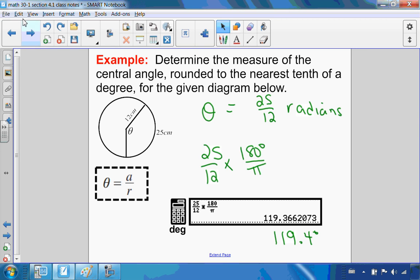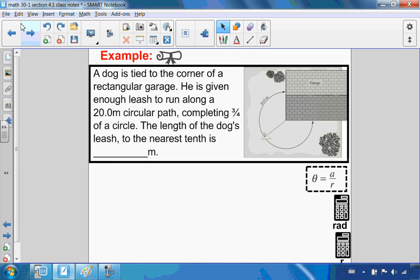I want to end with two diploma questions. Every time I've seen the diploma, there's always an arc length question. In the first one, a dog is tied to a corner of a rectangular garage. He is given enough leash to run along a 20-meter circular path, completing three-quarters of the circle. The length of the dog's leash to the nearest meter is what? This is really asking us to find the radius.